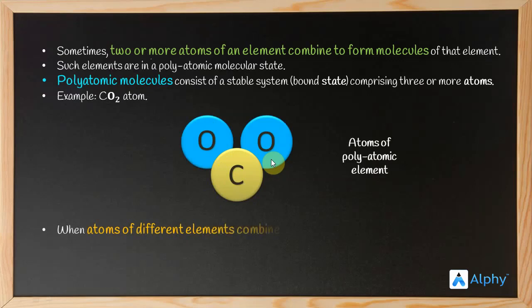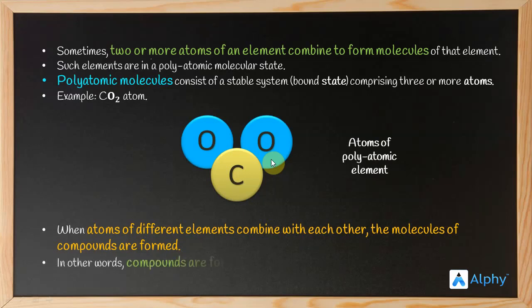When atoms of different elements combine with each other, molecules of compounds are formed. Different elements' atoms come together to form different compounds. In other words, compounds are formed by chemical attraction between different elements. For example, CO2 has two different elements' atoms together in polyatomic molecular state, forming a compound.